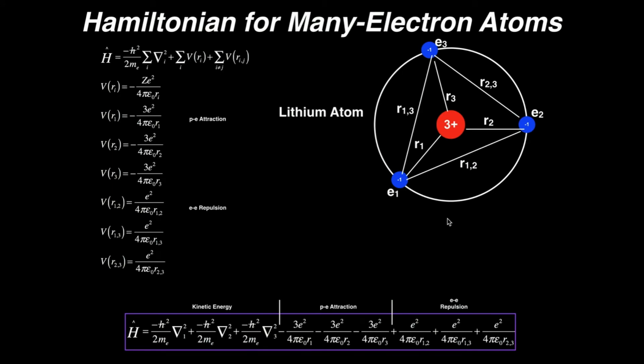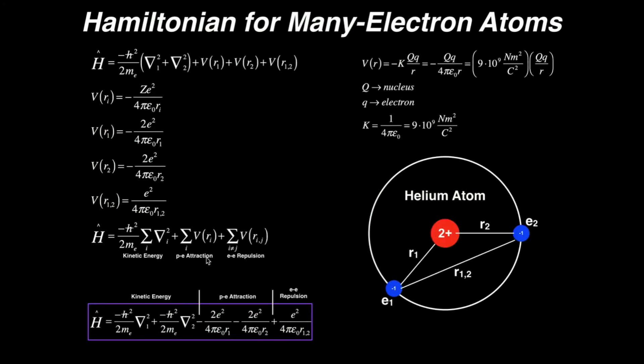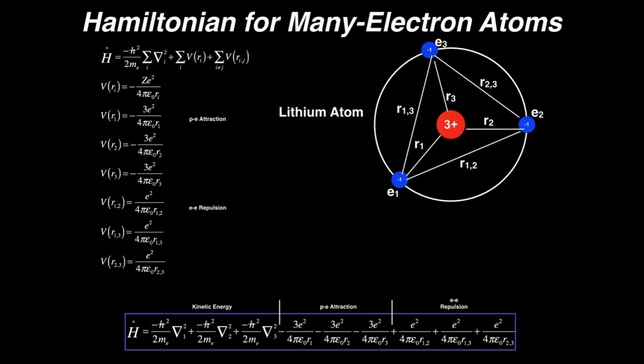In the previous video we actually looked at the Hamiltonian and derived it for a helium atom. Now we're going to deal with a bigger atom, which is lithium, and we're actually going to get the Hamiltonian for this multi-electron atom.